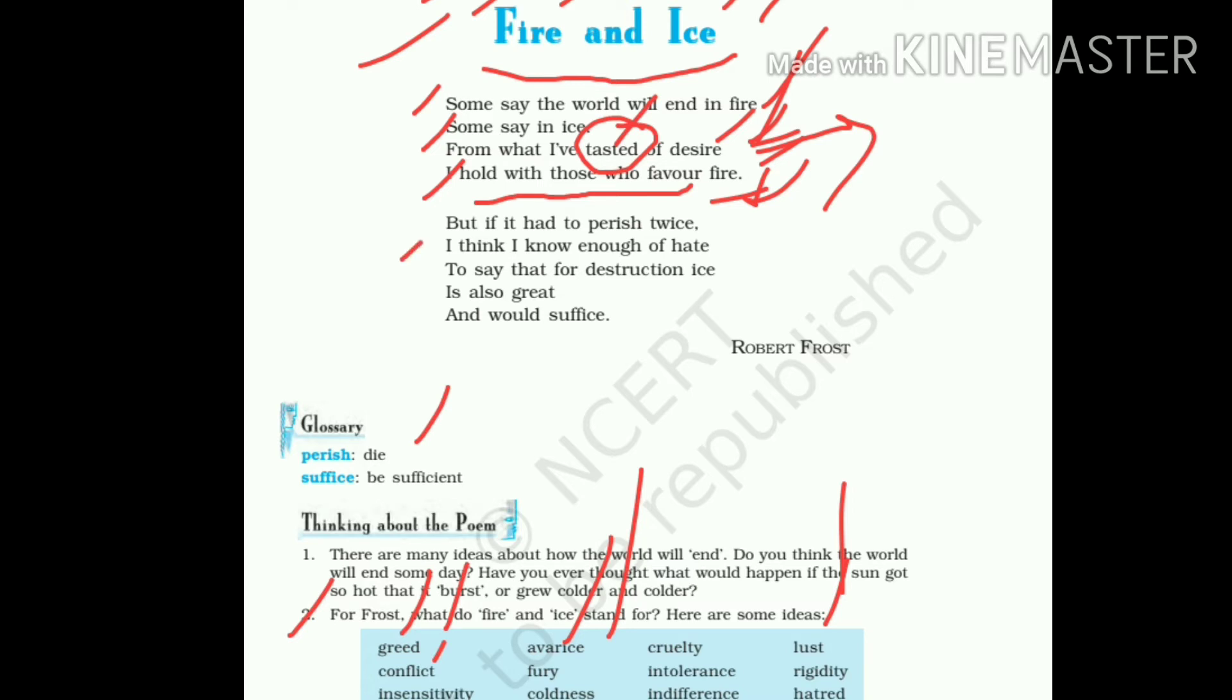I think I know enough of hate. So he says that the hatred I have seen a lot. I know enough of hate means I have seen a lot of people hating one another, extreme hate. To say that for destruction, ice is also great and would suffice. So I can say that for destruction, ice is also a big element, and it is sufficient. Ice is a sufficient element for the destruction of this world.